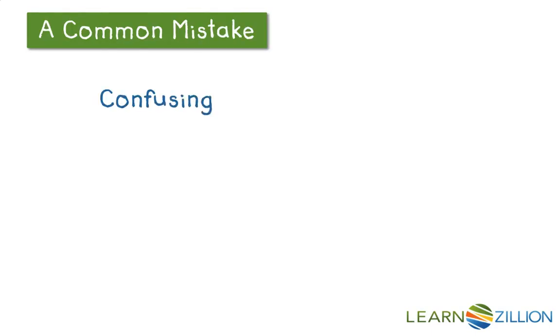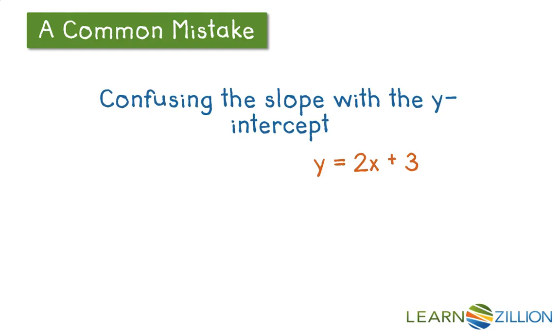Now a common mistake that a lot of students make is confusing the slope with the y-intercept. So if we have an equation such as this, y equals 2x plus 3, we know we have a 2, and we know we have a 3, but we're not quite sure which one goes where.